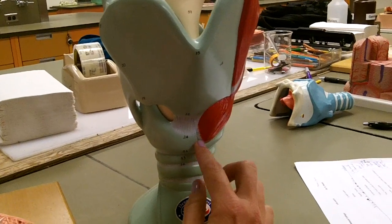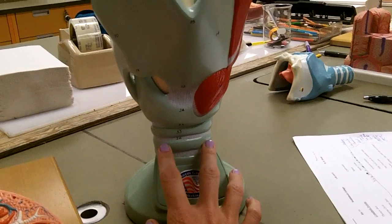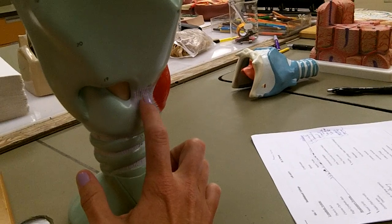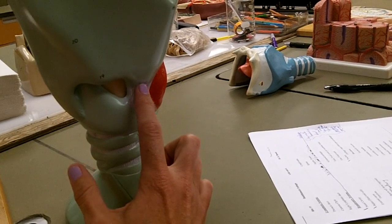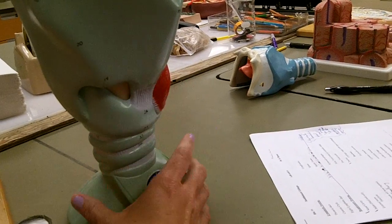Down here below it you can see the cricoid cartilage, and below that you're seeing the tracheal C-rings. There are ligaments in between the cartilage as well, so this would be the thyrocricoid ligament. It's named for the two cartilages that it connects.